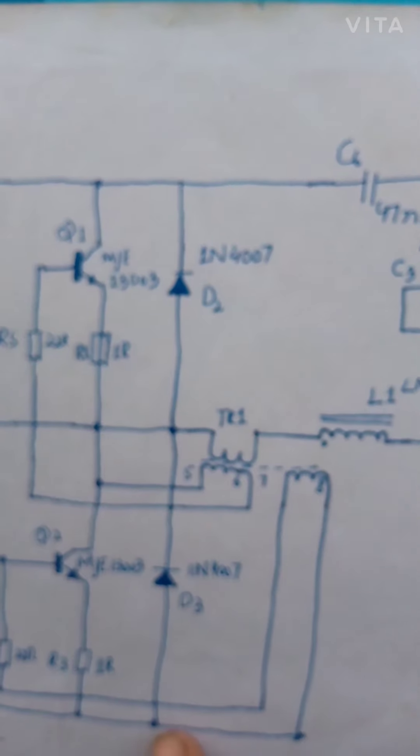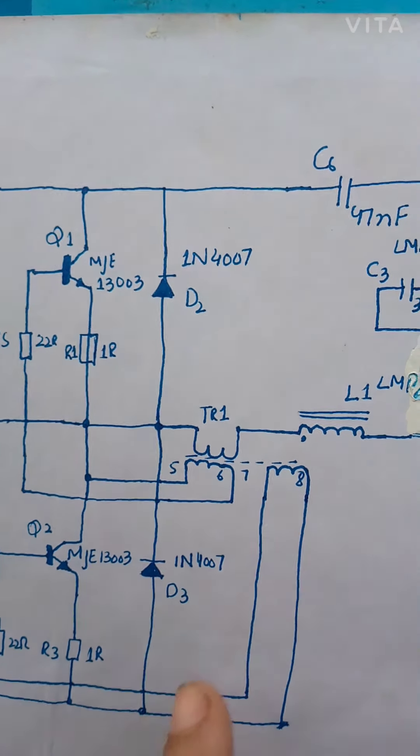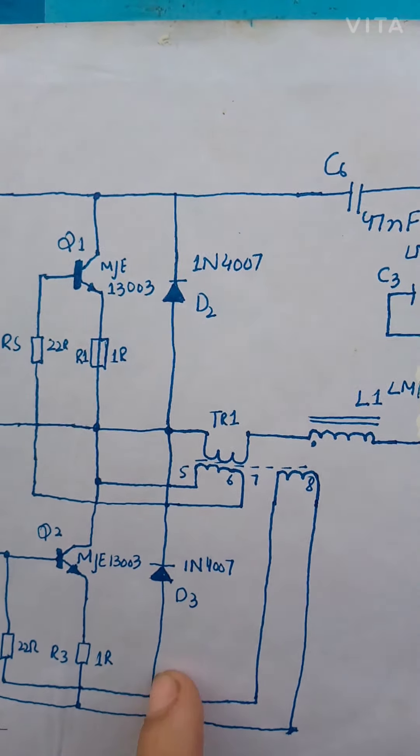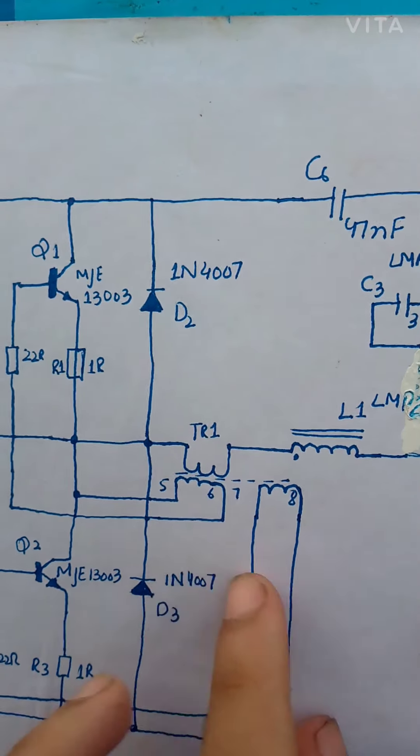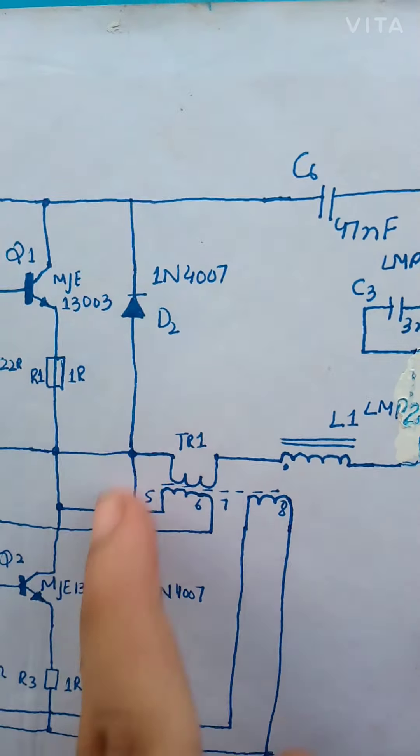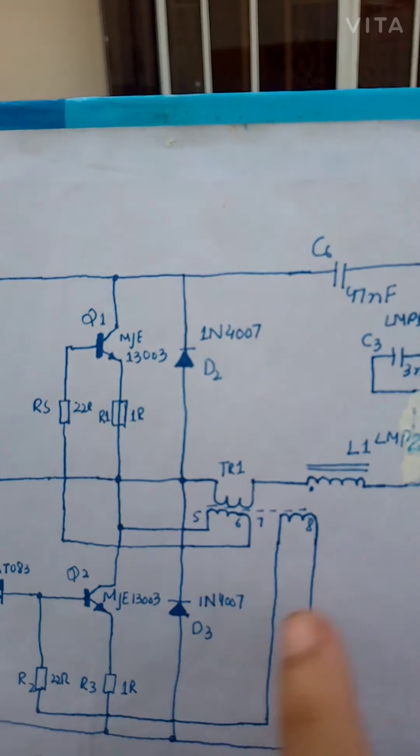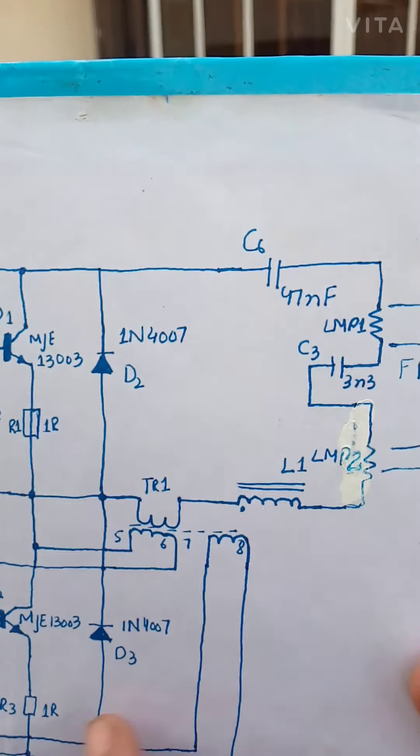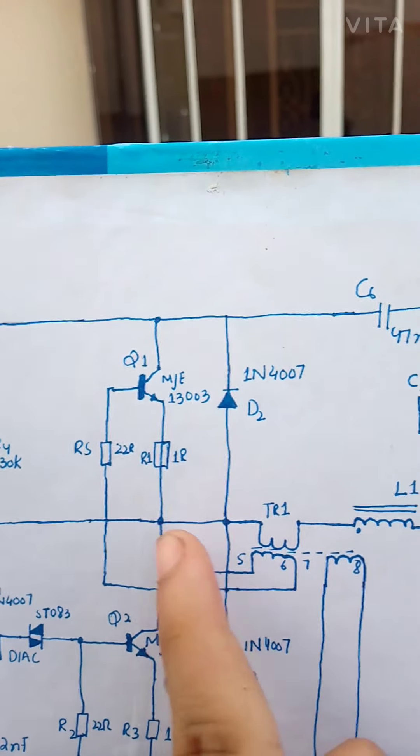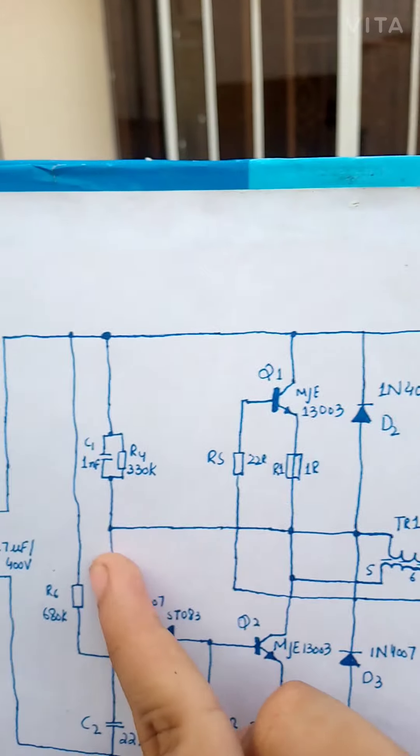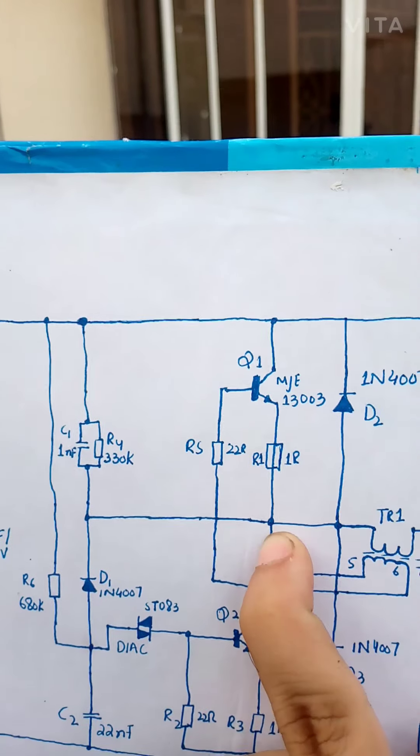This 1N4007 is reverse connected because this is the positive side, I mean negative on one side negative input. This diode connected to negative side to positive. Both diodes are network reverse, vice versa configuration.